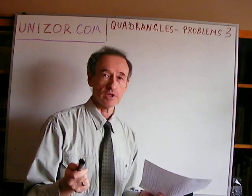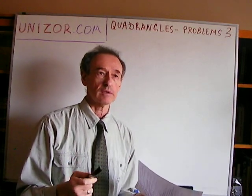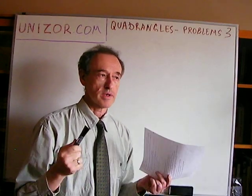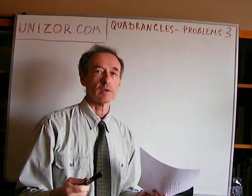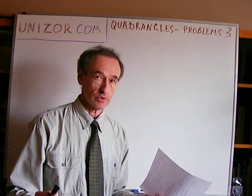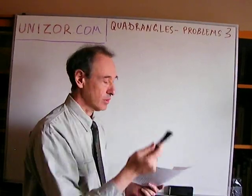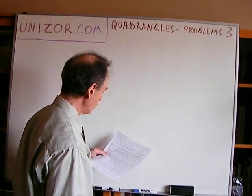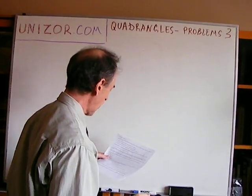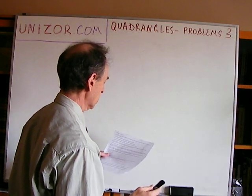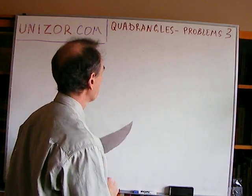Remember, the definition of a rectangle is a parallelogram with all internal angles equal to each other. Now, prove that a parallelogram with perpendicular diagonals is a rhombus.